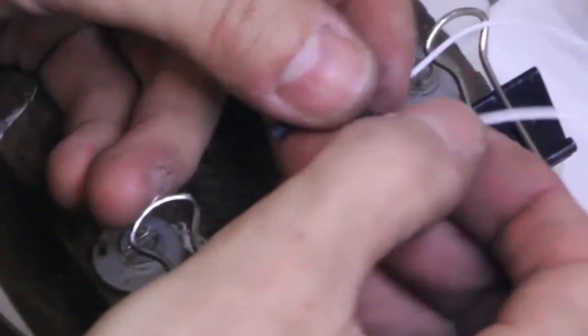And we'll feed the heat shrink onto the heat bed wires. Don't forget that step. Otherwise you have to desolder your connection.